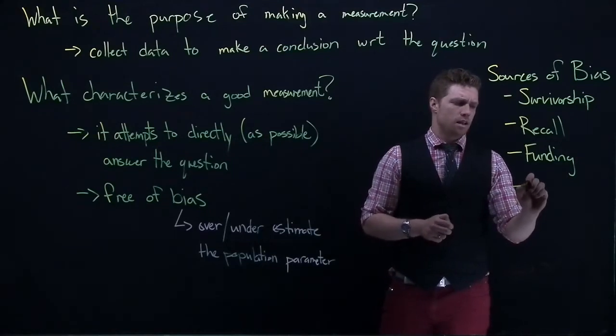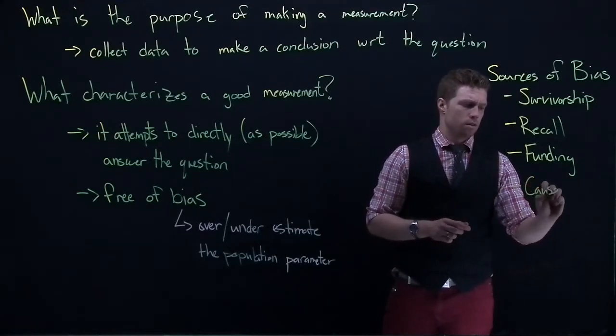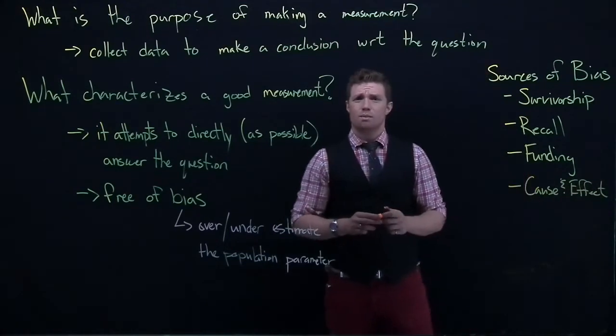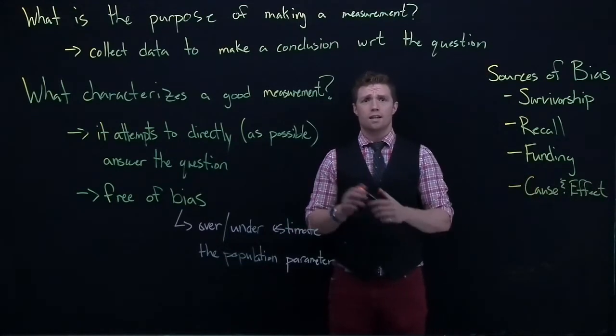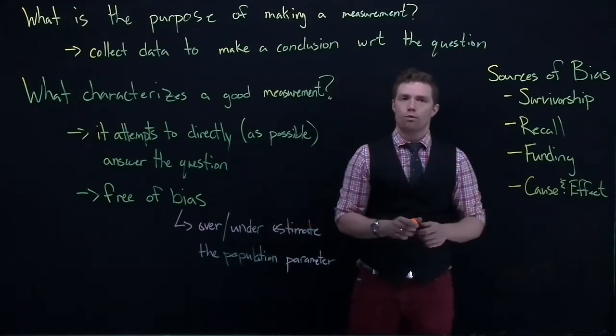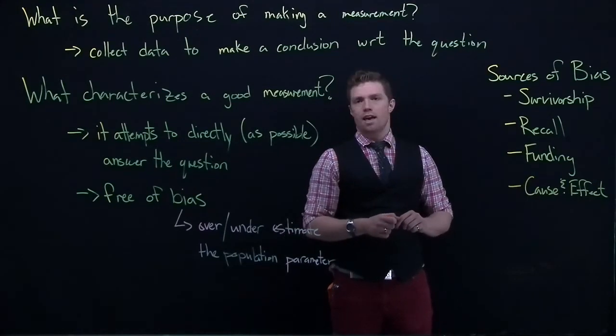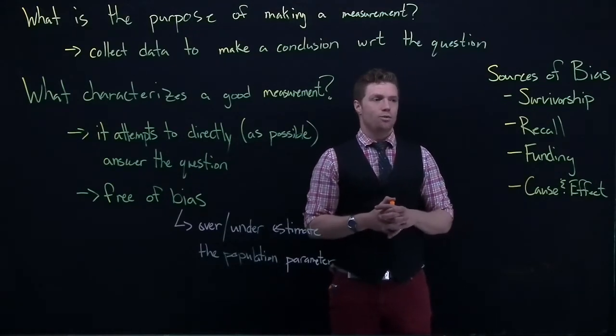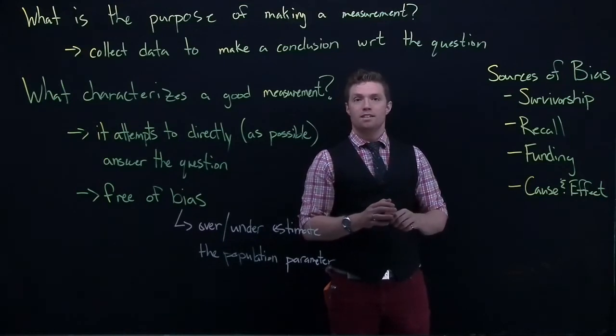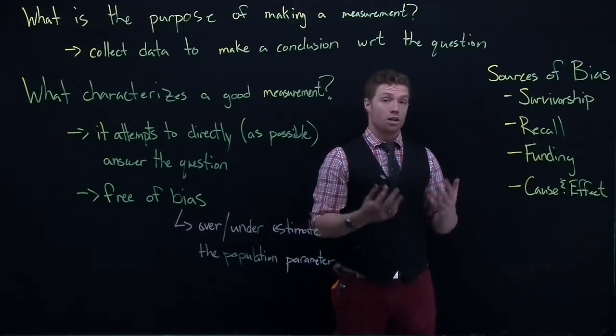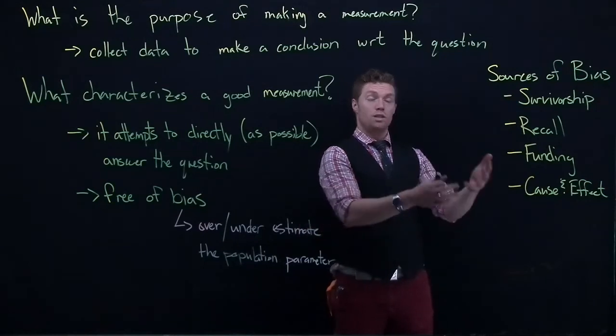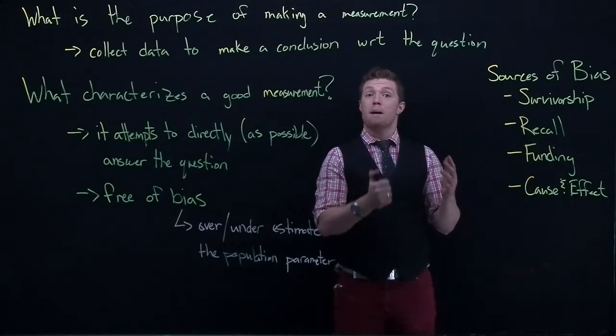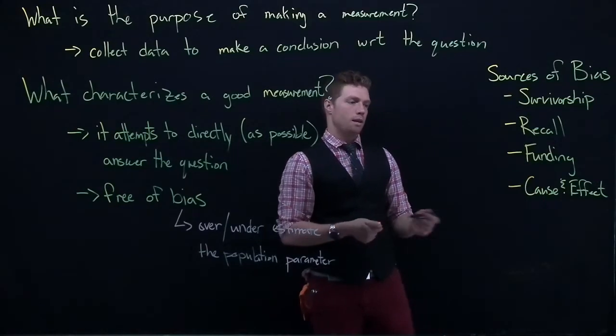All right. Another one that we can see is cause and effect. Cause and effect bias. So sometimes we conclude that... so for example, if we are looking at heart disease and baldness, we can see that they are connected. And we could be tempted to say that balding causes heart disease or heart attacks. And that's really not what's going on. And so that cause and effect can cause some bias in some of the conclusions that we're making.